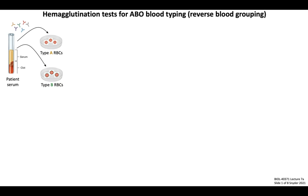Remember that there are four blood types — A, B, AB, and O — and O has neither A nor B antigens. All of these differ with respect to carbohydrate or sugar antigens that are displayed on their cell surface.